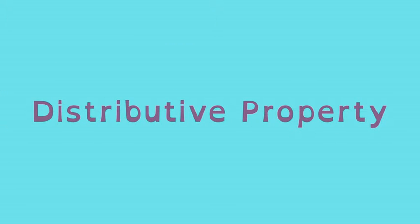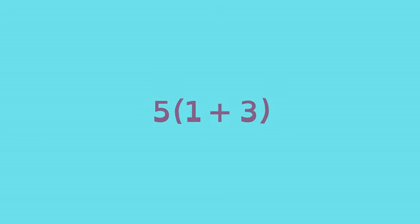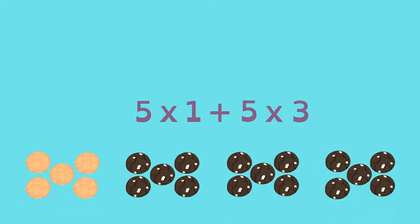Here's how the distributive property helps generate equivalent expressions. The 5 in this expression is distributed to the 1 and the 3, creating another expression. Look familiar?